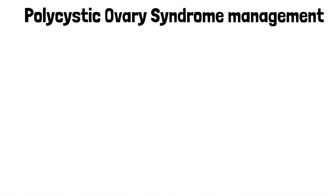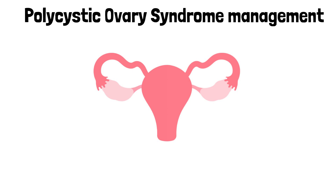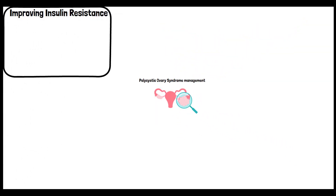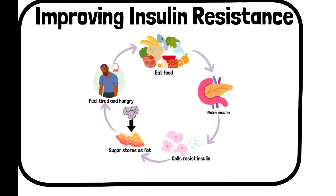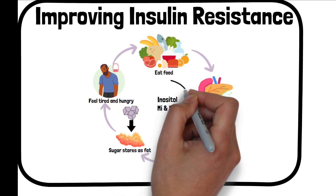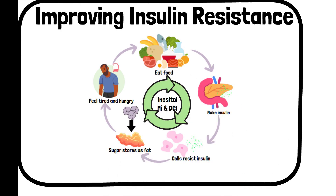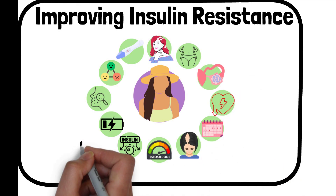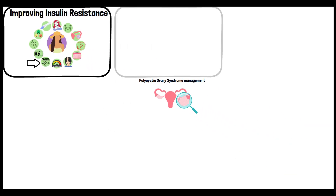Inositol is particularly beneficial for women with PCOS. It can help improve insulin resistance, which is a common condition in PCOS. PCOS is often associated with insulin resistance, where the body doesn't effectively use insulin. Inositol, particularly in the forms of myoinositol and d-chiroinositol, has been shown to improve the body's response to insulin. By enhancing insulin sensitivity, inositol helps in reducing one of the core issues in PCOS, leading to better management of the condition.